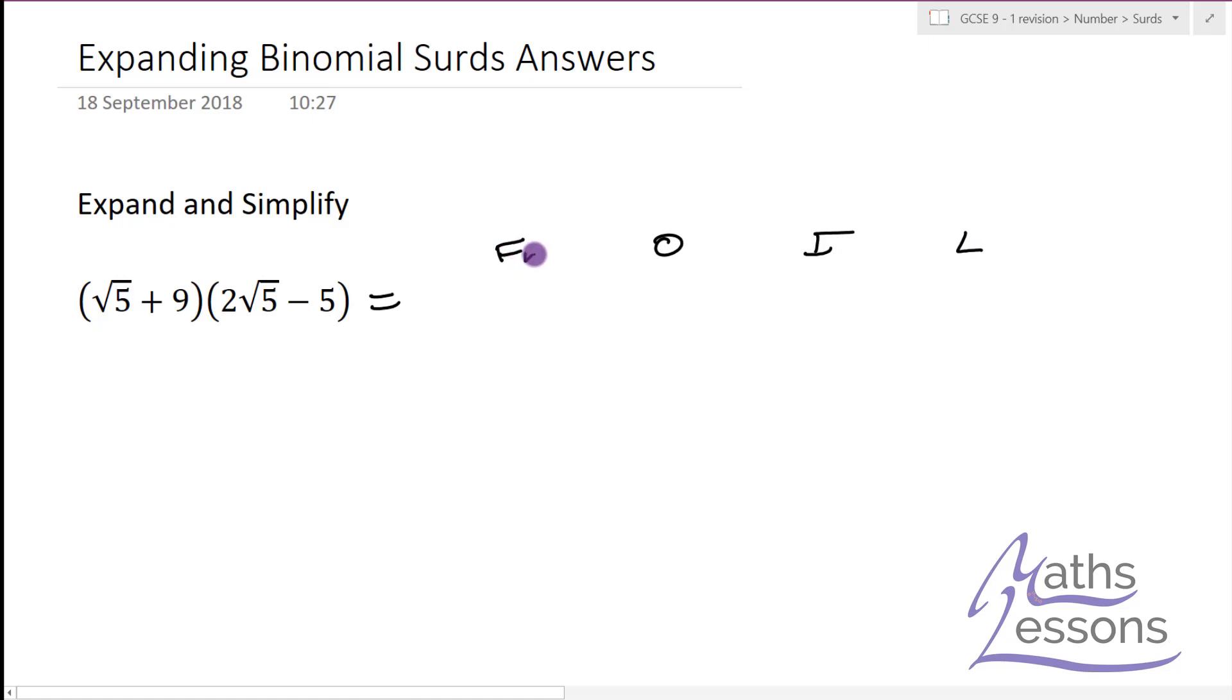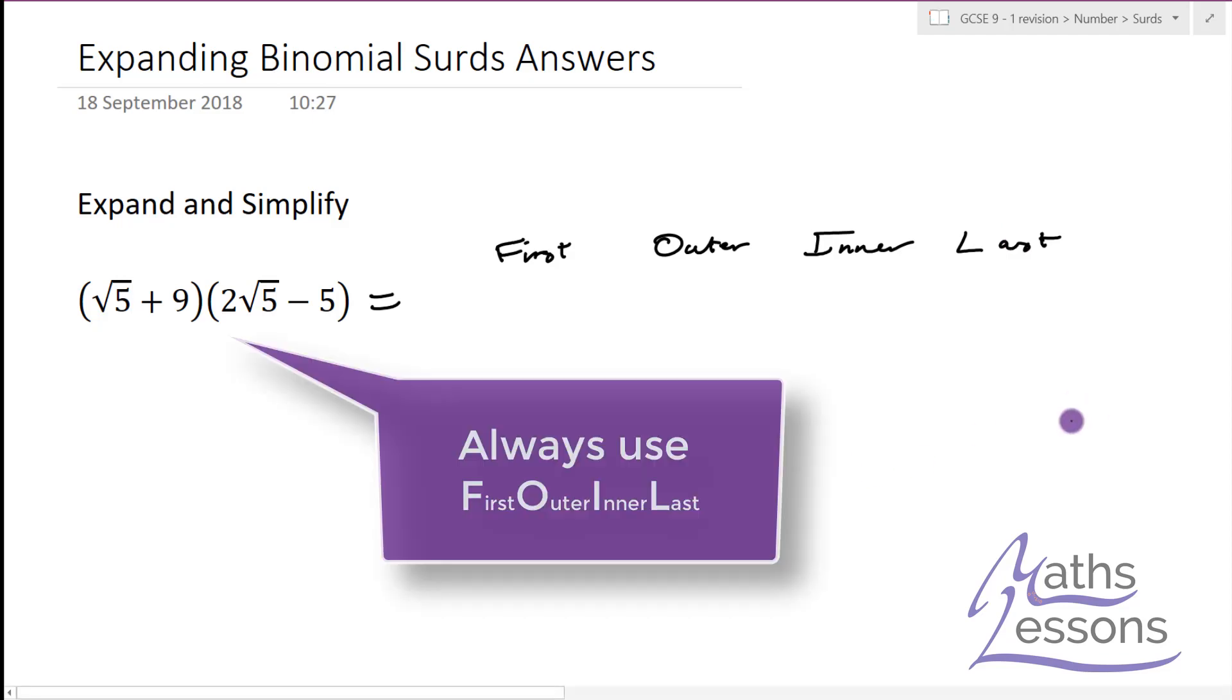F stands for first, O stands for outer, I stands for inner, and L stands for last. If you do it this way, when you're multiplying out in most normal questions, it actually helps you simplify at the end and also makes sure you don't forget anything.